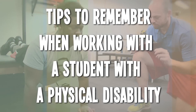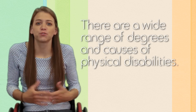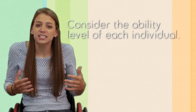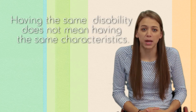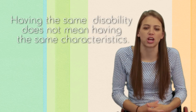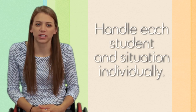Way to identify his ability level and adapt accordingly. You should be ready for your students, too. Here are some tips to remember when working with a student who has a physical disability. There are a wide range of degrees and causes of physical disabilities. It is important to consider the ability level of each individual. One child who has spina bifida may not have the same characteristics as another child who has spina bifida. Handle each student and situation individually.